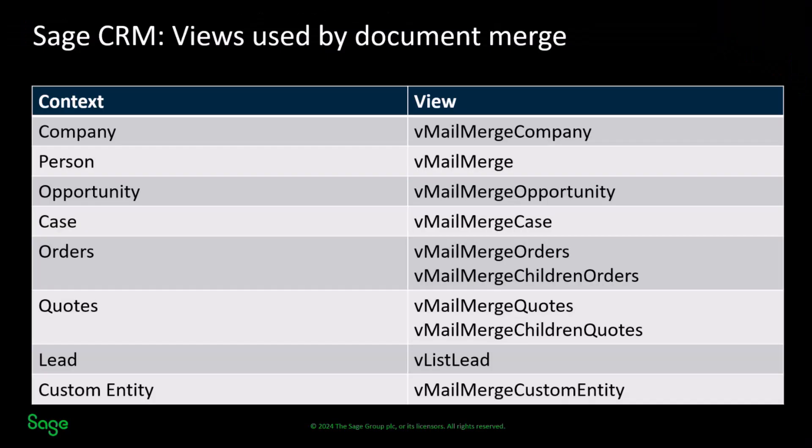This slide reminds us that every merge context draws from very specific views. The quote draws data from two views: vMailMergeQuotes (the header record) and vMailMergeChildrenQuotes (the child or details record). You can change those views inside Sage CRM to extend the information available — for example, if your views carry out calculations to create derived or calculated fields, those can be included either in the header or within the repeating body of the interior nested merge.